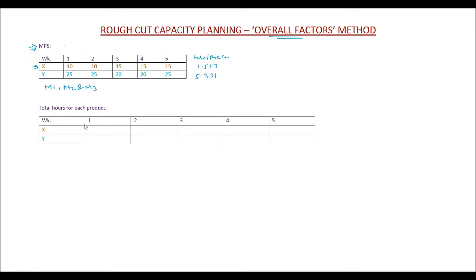For week 1, X is required to be produced in 10 numbers, and each unit requires 1.557 hours. The number of hours required for 10 units in week 1 will be 10 multiplied by 1.557. Same in week 2: 10 into 1.557.